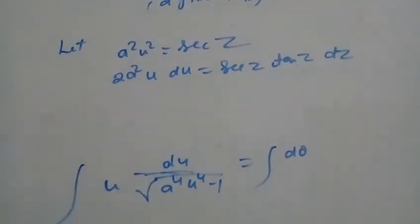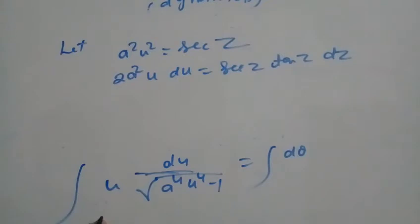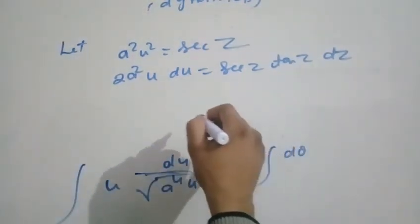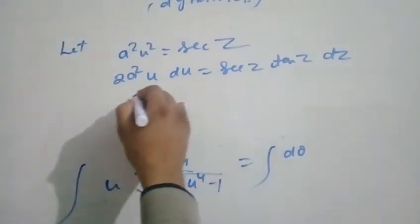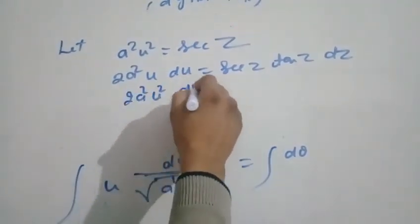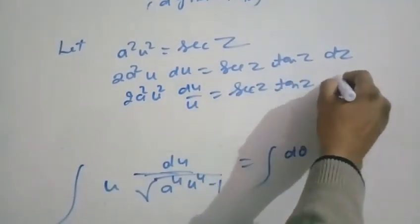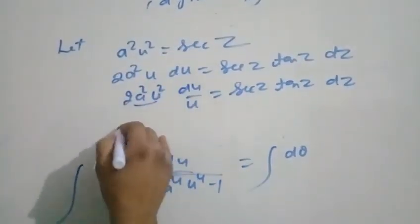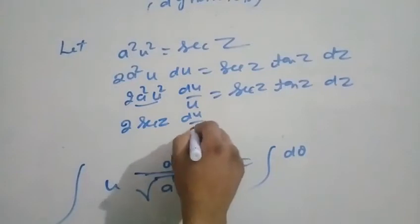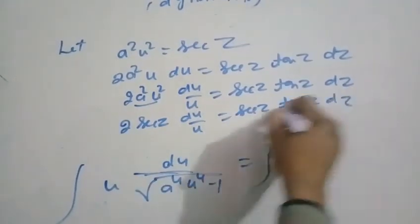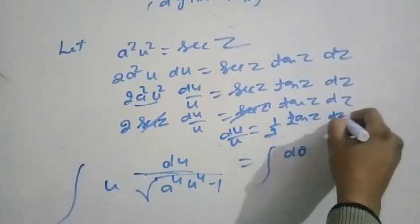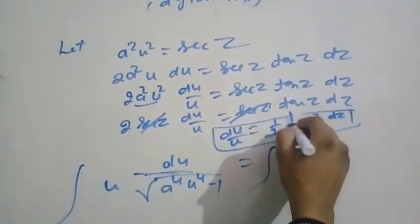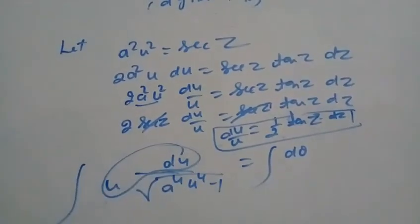Using the substitution: let z = a²u², so dz = 2a²u·du. Then du/u = (1/2)·(10z)·dz... Using substitution let z such that a²u² = sec(z), so d(a²u²) = sec(z)tan(z)dz. Multiplying through: du/dθ = (1/2)tan(z) and d(u)/u gives (1/2)tan(z)dz.